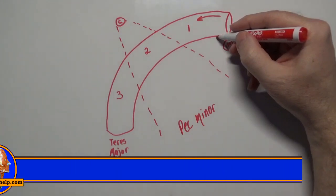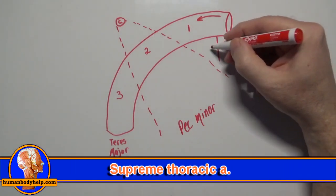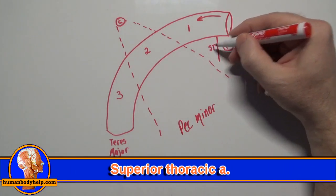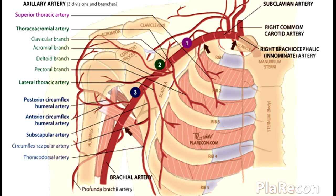The first branch we'll draw is the supreme thoracic artery. Some people like to call it the superior thoracic artery. This artery will help to supply the first and second intercostal spaces.